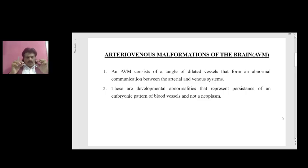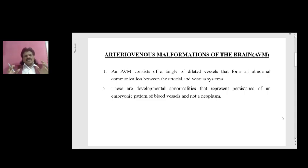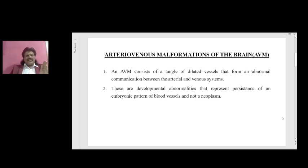Because they are developmental abnormalities, they are weak and they are prone to rupture and causing hemorrhage. So one of the other important causes of hemorrhagic stroke is arteriovenous malformations. An AVM consists of a tangle of dilated vessels that form an abnormal communication between the arterial and the venous systems.